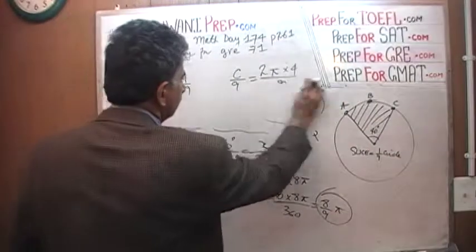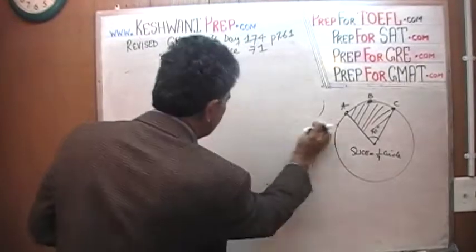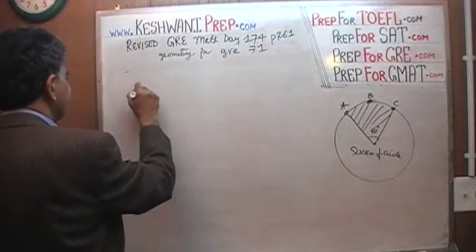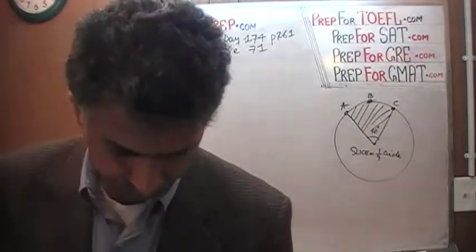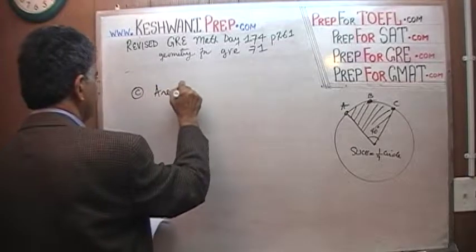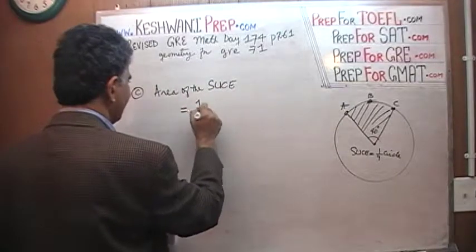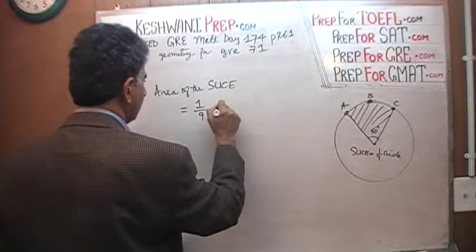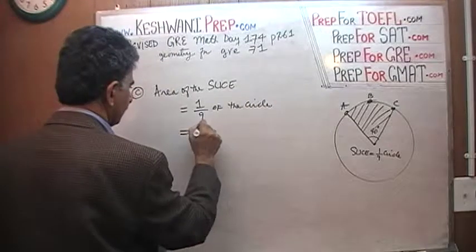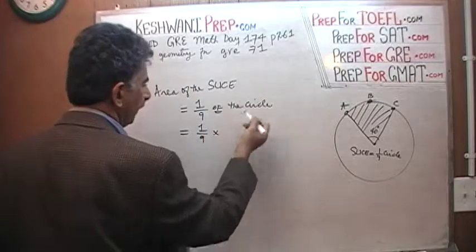Slice we just found equals a 9th of the circle, area of the circle. This was part C. Area of the slice equals 1/9th, 1/9th of the circle, which is 1 over 9. Of means times.